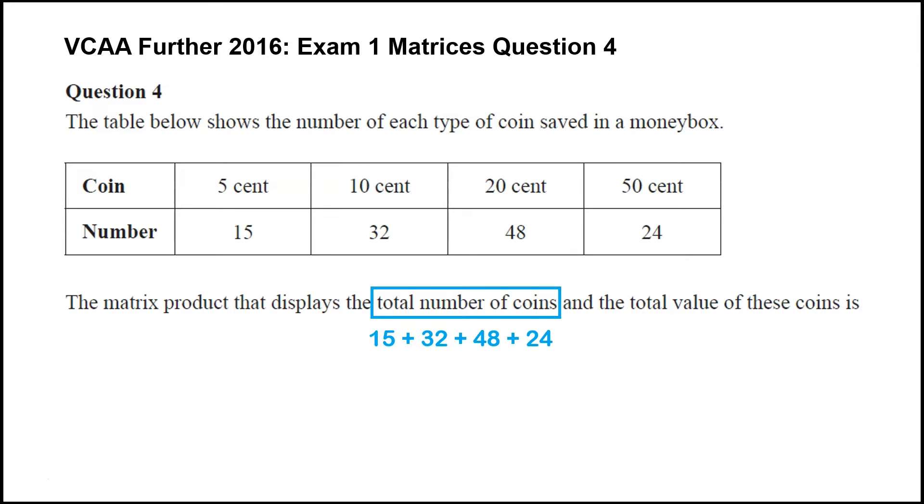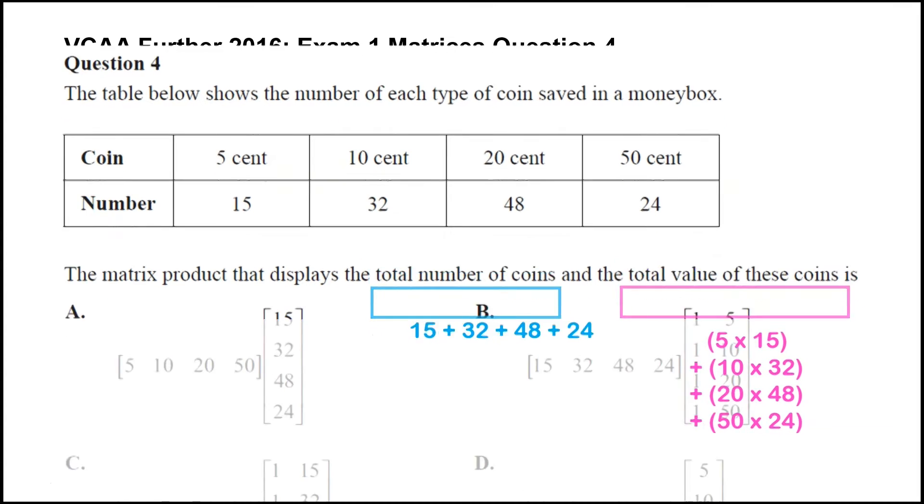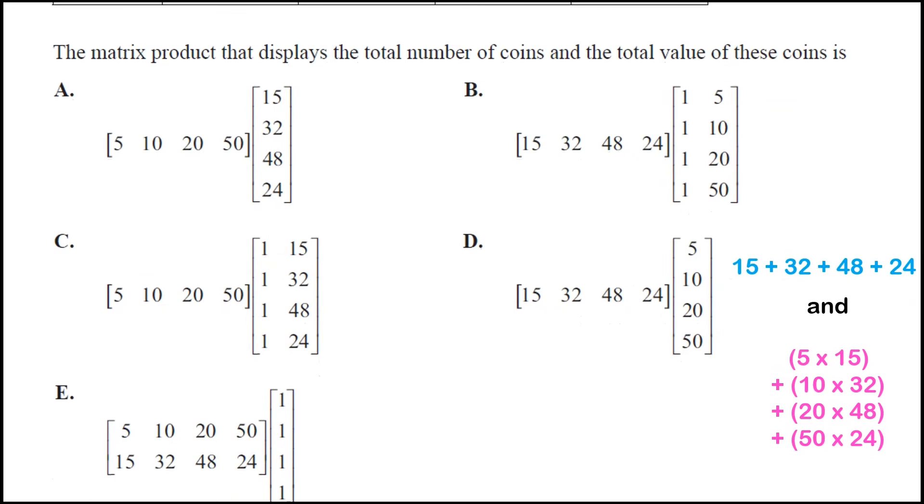it's just the sum 15 plus 32 plus 48 plus 24. And the next thing we want is the total value of these coins. Well, the 5 cents are worth 15, the 10 cents are worth 32, etc. So we're going to multiply and add. Now it's these two things that we want in our matrix product. So if we go back to our options now and look for which one of those five products has each of those two things.